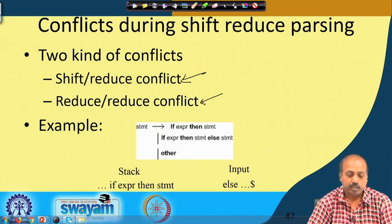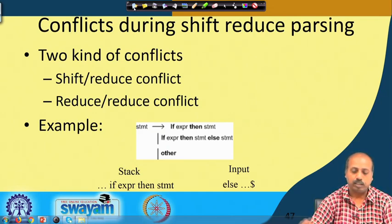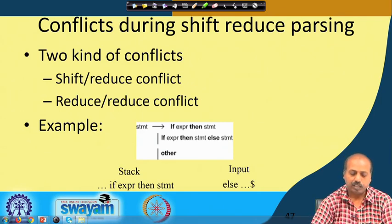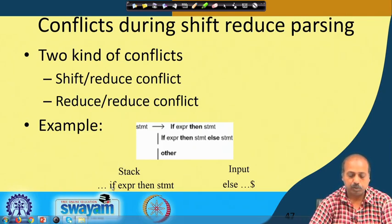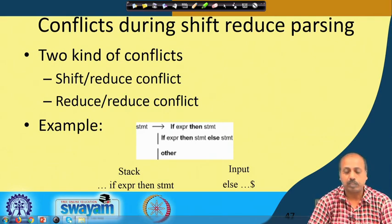Let us take an example to see how shift-reduce conflicts can occur. Consider the if-then-else grammar: a statement producing 'if expression then statement', or 'if expression then statement else statement', or other statements. At some point the situation may be that in the stack we already have the tokens 'if expression then statement', where expression and statement are non-terminals and if and then are terminals.